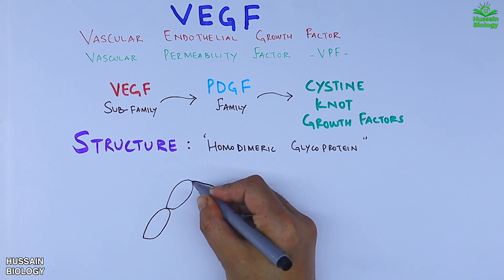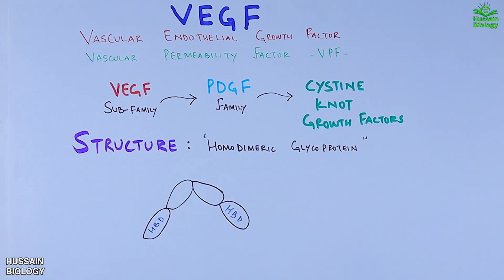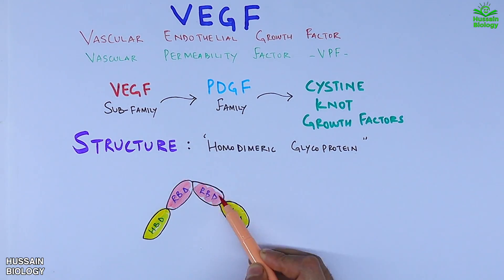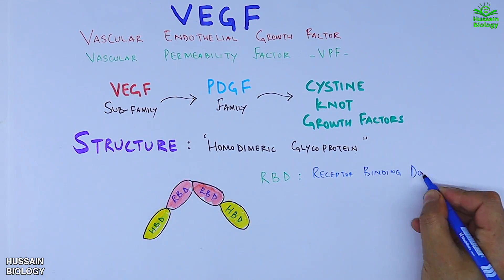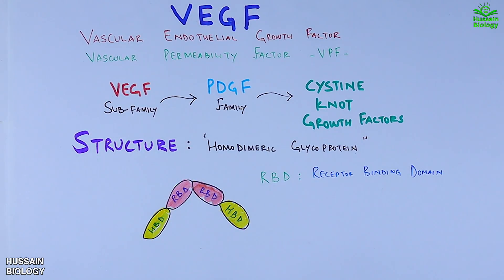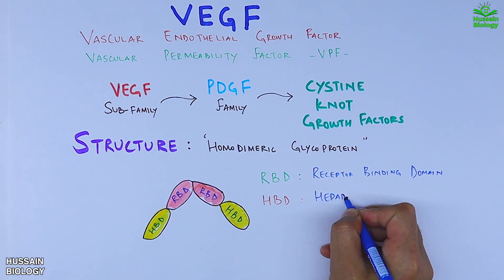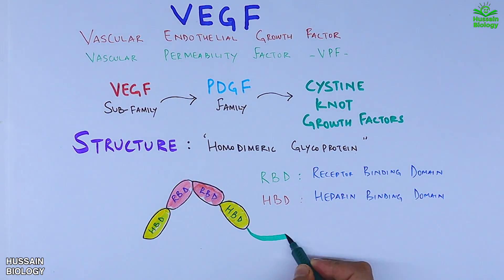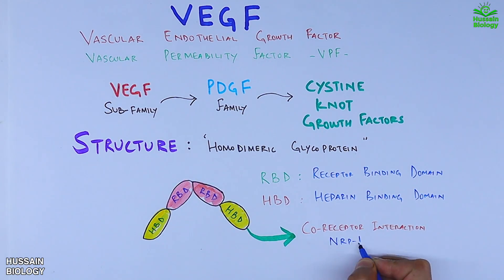VEGF has two RBD domains and two HBD domains. The RBD is the receptor binding domain which binds with respective receptors, whereas the HBD is the heparin binding domain which mediates co-receptor interaction like with NRP1 in case of VEGF-A protein.